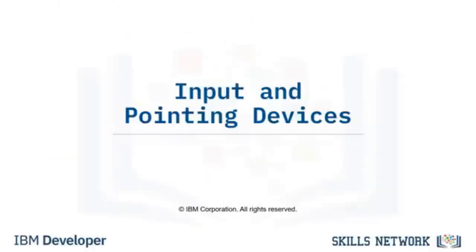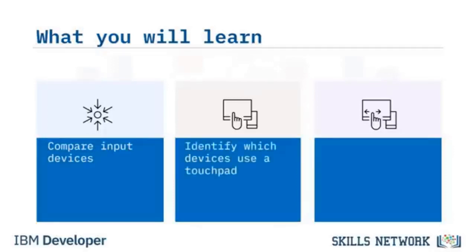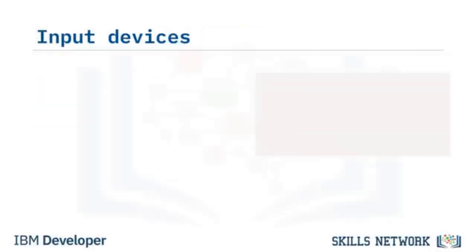Welcome to Input and Pointing Devices. After watching this video, you will be able to compare input devices, identify which devices use a touchpad, and define a pointing device. A pointing device — such as a keyboard, mouse, joystick, touchpad, or trackball — is used to move the cursor on a computer screen. All pointing devices send a command in the form of data to the computer.